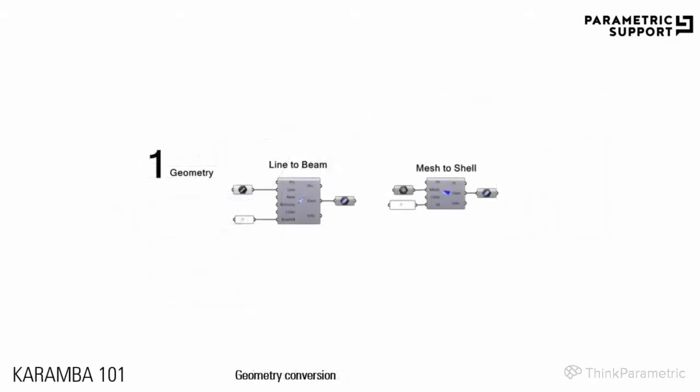In order to create geometry, you have to specify lines or meshes. You need to convert the provided wireframe geometry into Karamba elements. Lines are converted with the Line to Beam component into beams, and meshes with the Mesh to Shell component into shells. If you give a name to the element, it allows assigning non-default cross-sections and materials.